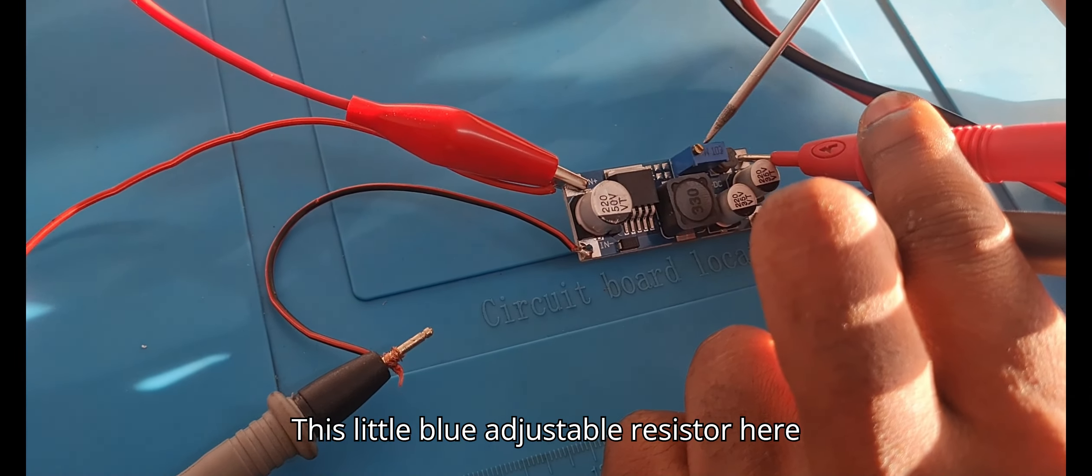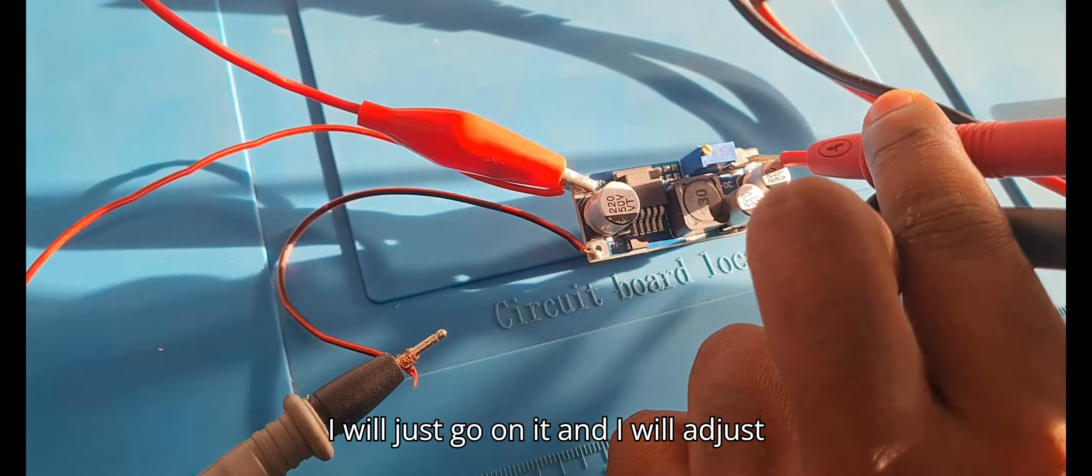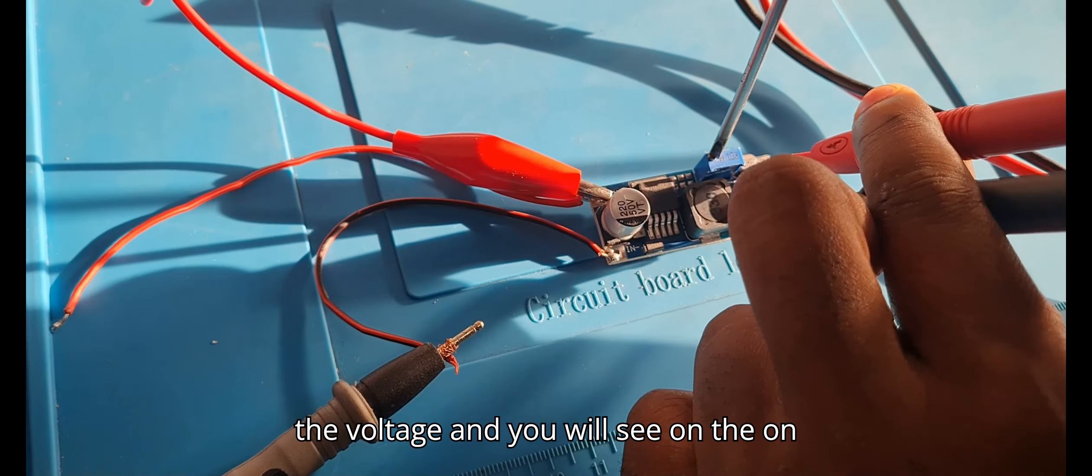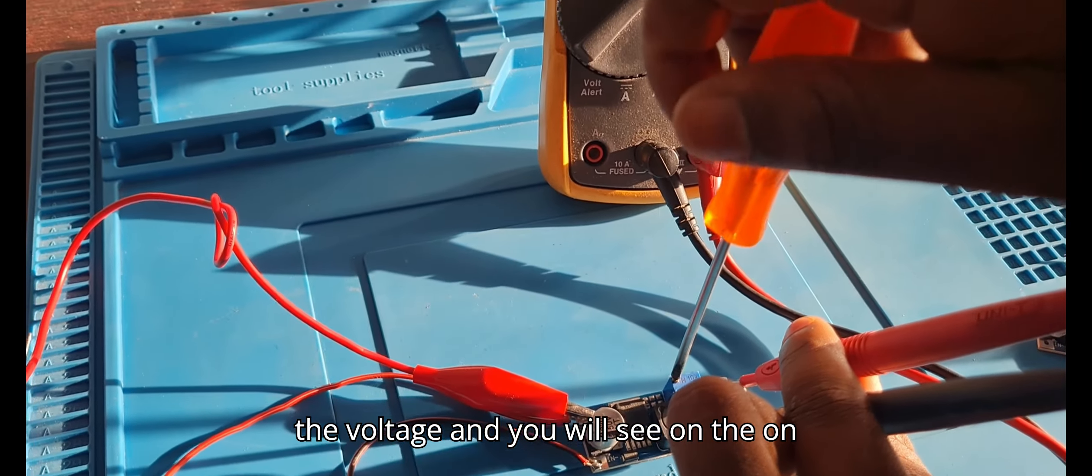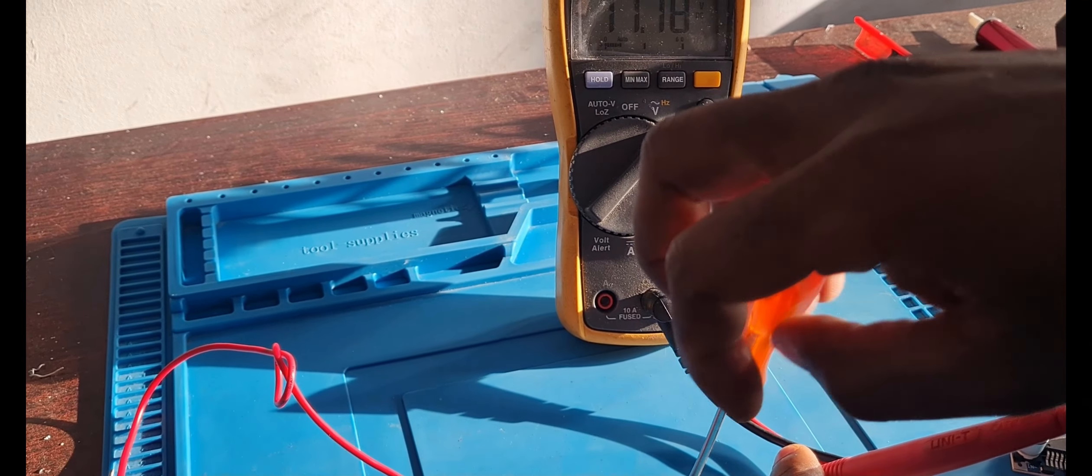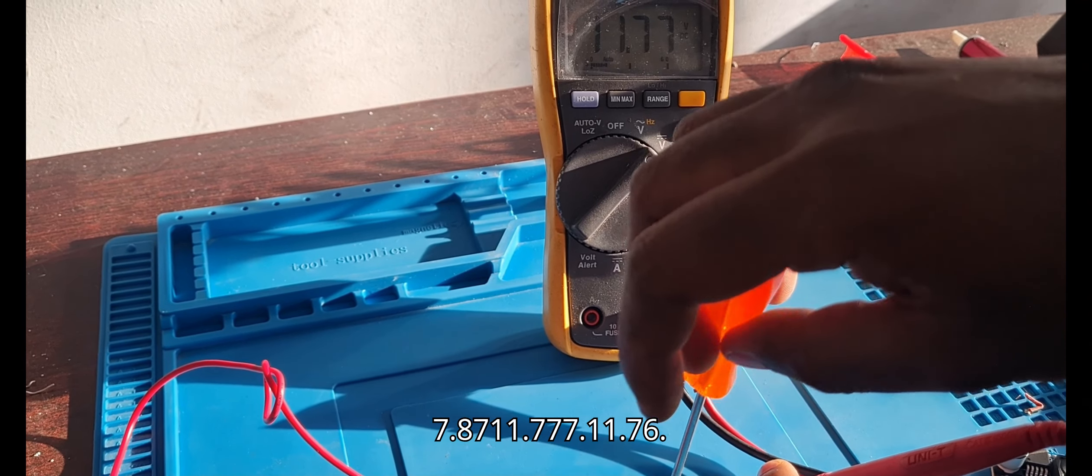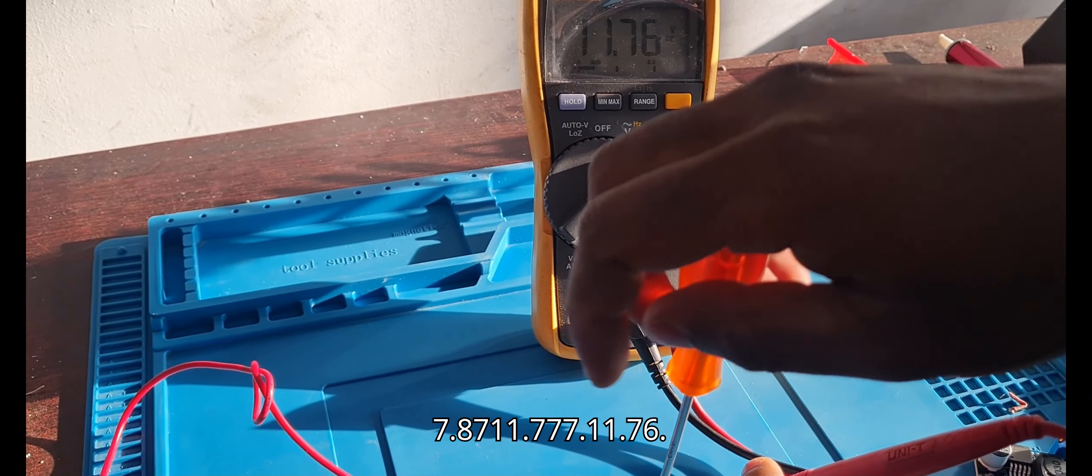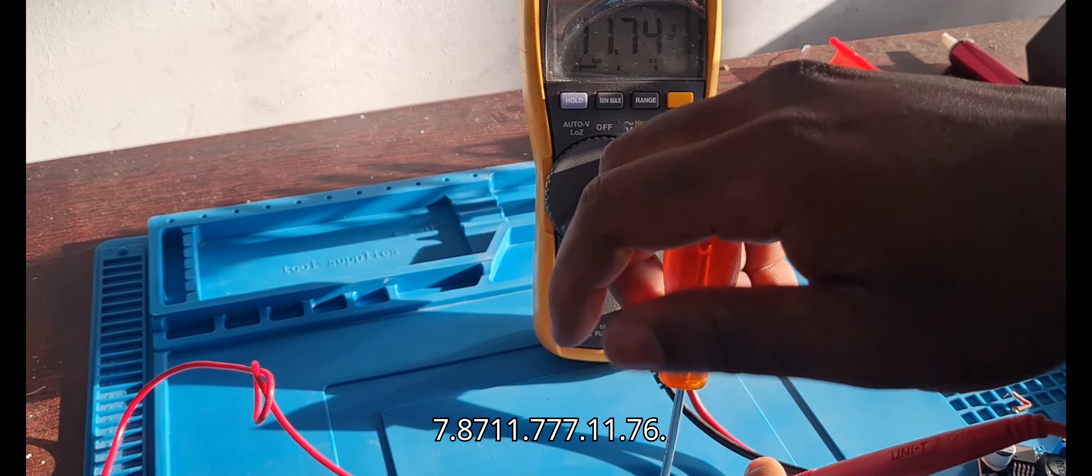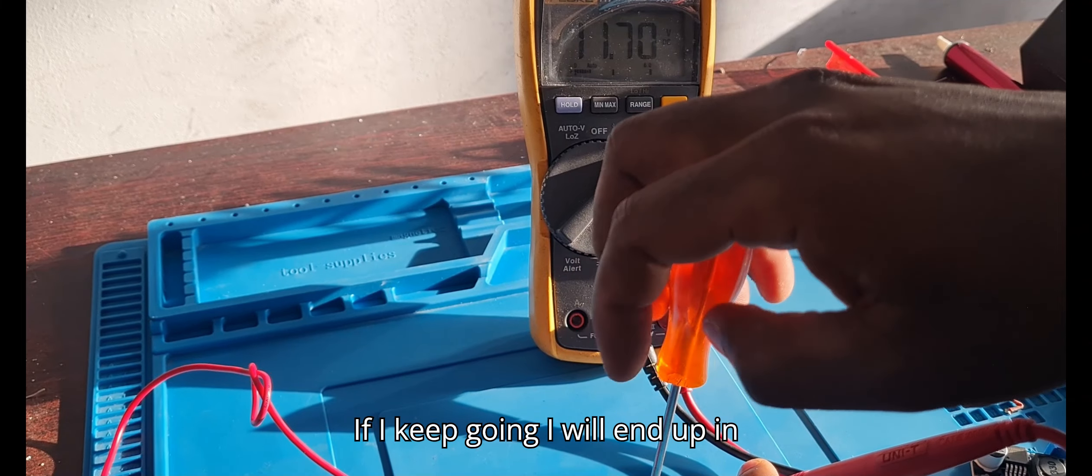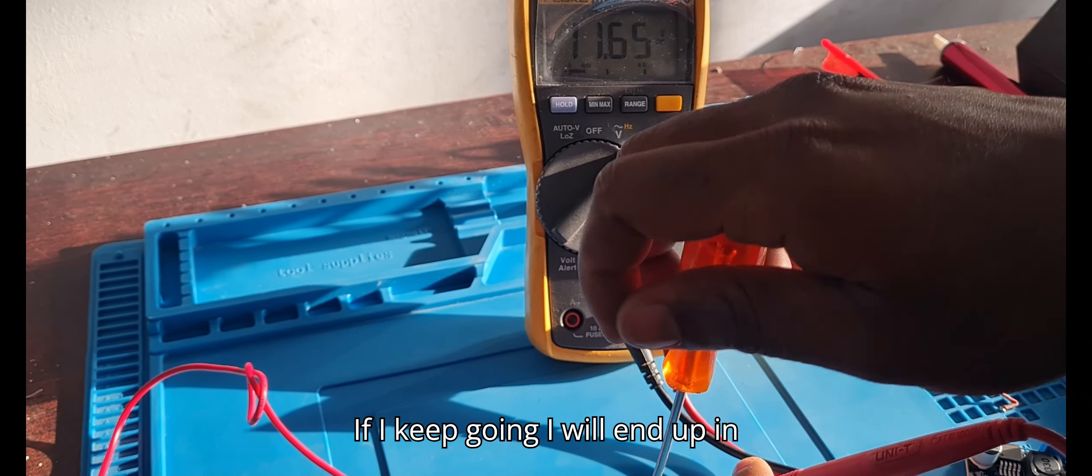I'll adjust the voltage and you'll see on the multimeter as the voltage changes. You see it's going 11.87, 11.77, 11.76. If I keep going I'll end up at ten volts.